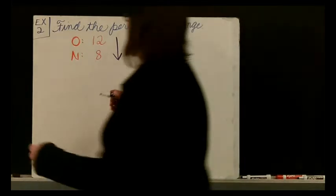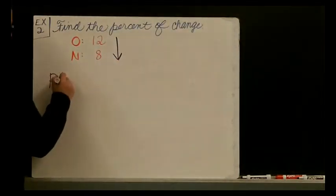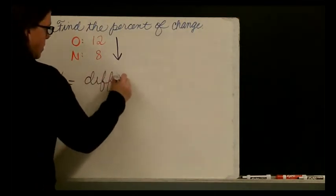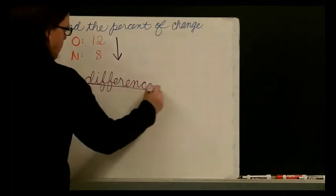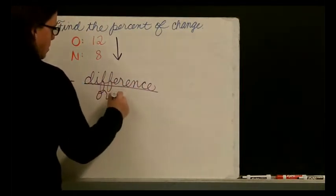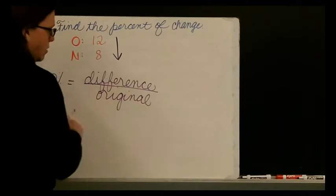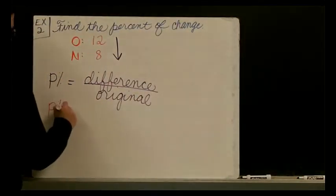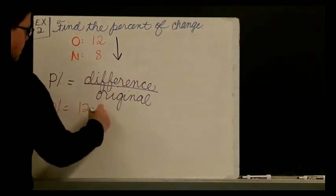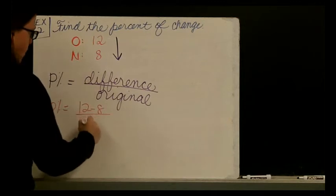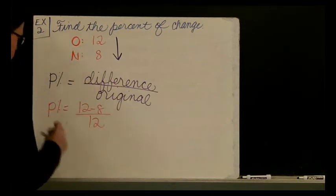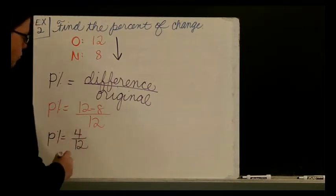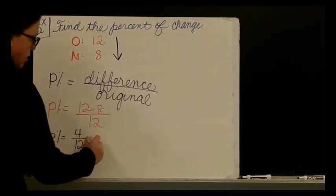Following with our steps, we are going to write our formula. So the percent of change is the difference divided by the original. So our percent of change is 12 minus 8 over the original number, which is 12. A percent of change is 4 over 12. 4 over 12 can be simplified to 1 third.